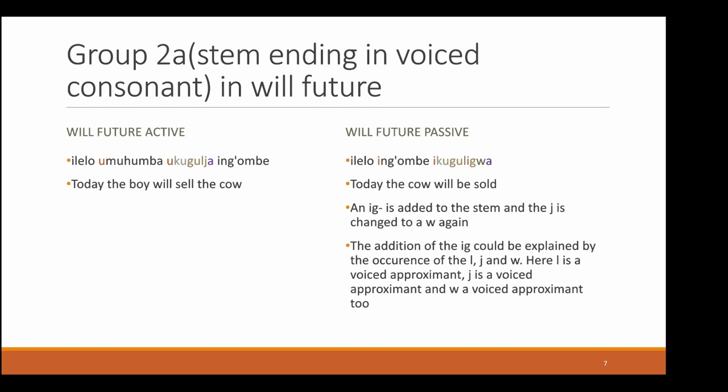In comparison we have group 2a, where the stem ends in a voiced consonant. First we're going to look at the real future. On the left we have: 'elelo umuhumba ukugulya ingombe,' which means 'today the boy will sell the cow.' In the passive: 'elelo ingombe ikugulwa,' meaning 'today the cow will be sold.' Here we have an IG which is added to the stem, and the J is changed to a W. The addition of the IG can be explained by the occurrence of the L, J, and Y — the L is a voiced approximant, same as J and Y. They all come together, and the last approximant J is deleted, so in total we have something like 'guligwa.'